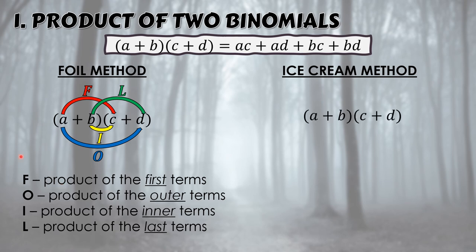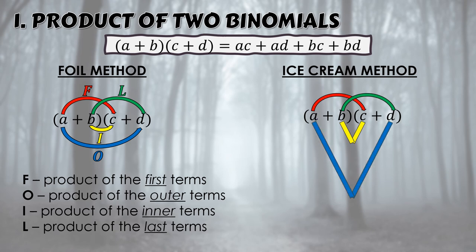Next is the ice cream method. With two binomials, the ice cream method looks like an ice cream cone shape in how you multiply. You multiply a times c, b times d (like the FOIL), then also b times c and a times d. That is the shape of the ice cream method.